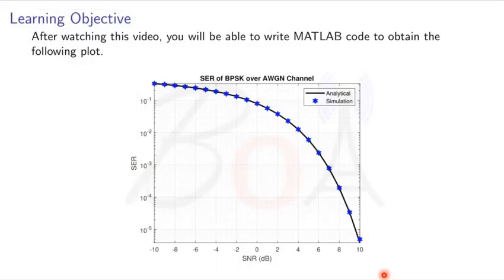Specifically, you will learn the MATLAB code to obtain this plot, which compares the analytical symbol error rate with Monte Carlo simulation for BPSK signal for AWGN channel.